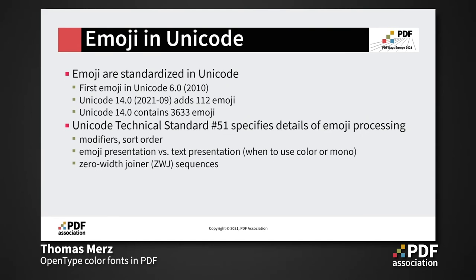Regarding the use of Unicode for exchanging documents including emoji: Unicode 6 in 2010 started to standardize emoji, and ever since they have expanded the set. Unicode 14, published just a few weeks ago, contains more than 3,600 emoji glyphs. There is an accompanying standard called Unicode Technical Standard 51, which details emoji processing in astonishing detail. If you want to implement emoji support in some application, you should take a look at this. One important aspect discussed is Unicode emoji sequences.